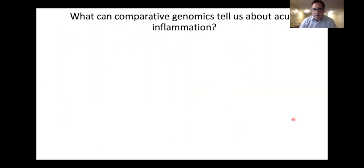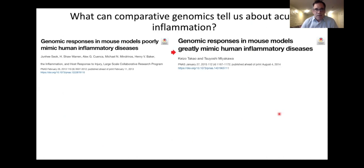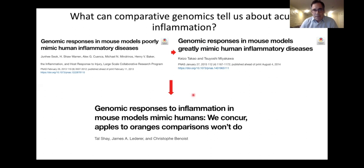What can we learn about acute inflammation from comparative genomics? There's been considerable interest from a disease modeling perspective, and depending on how you design the experiment, you can reach very different answers. One study created a lot of attention looking at how well mouse models recapitulate human inflammatory disease; using the same data, another group came to the precisely opposite conclusion. After much back and forth in PNAS, a happy medium was reached: when comparing inflammation across species, models can be good, but it really requires setting things up to compare apples to apples.